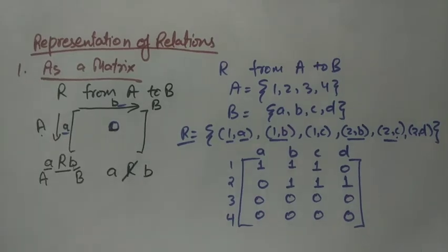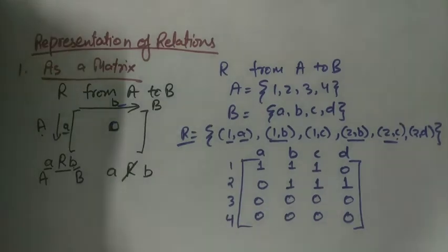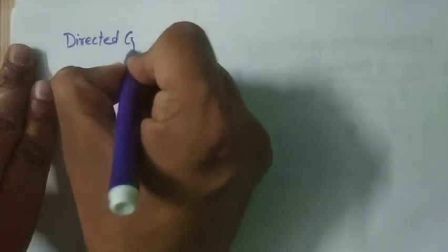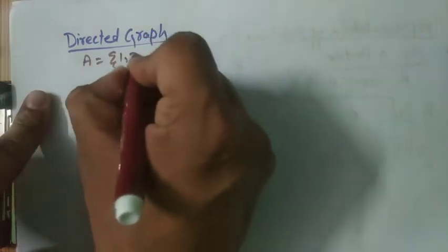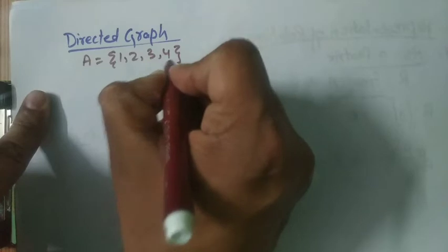Now let us see another way — we can represent a relation by a directed graph. In this case, the relation R must be from a finite set to itself. Only when the relation is from a finite set to itself can we represent it by a directed graph.